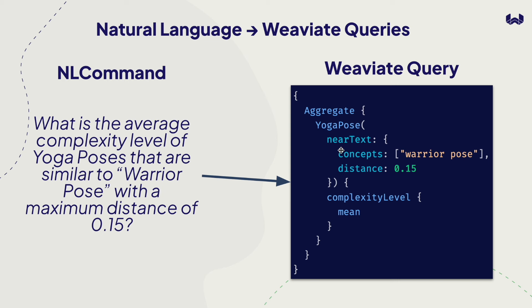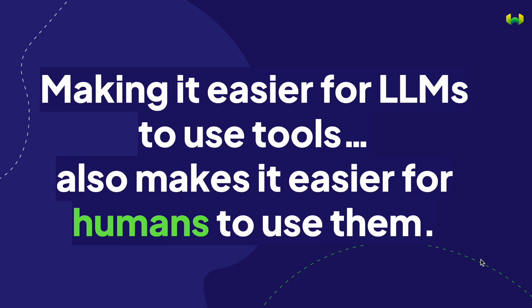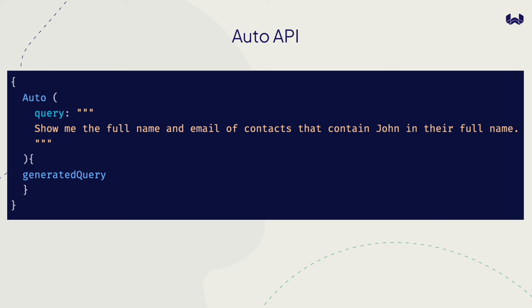The general idea is to let you translate from natural commands into these queries. We needed to generate a training data set that takes in natural commands, the API reference for this composition of aggregate vector search, and then calculating the mean of the results of a particular property. We also have a custom schema for yoga pose, which has properties like the complexity level, as well as a vectorized property. Making it easier for LLMs to use tools also makes it easier for humans — this is a proposal for the auto API.